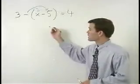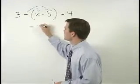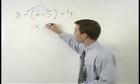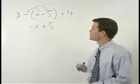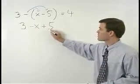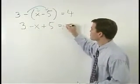So this x becomes negative x, and this negative 5 becomes positive 5. So we have 3 minus x plus 5 equals 4.